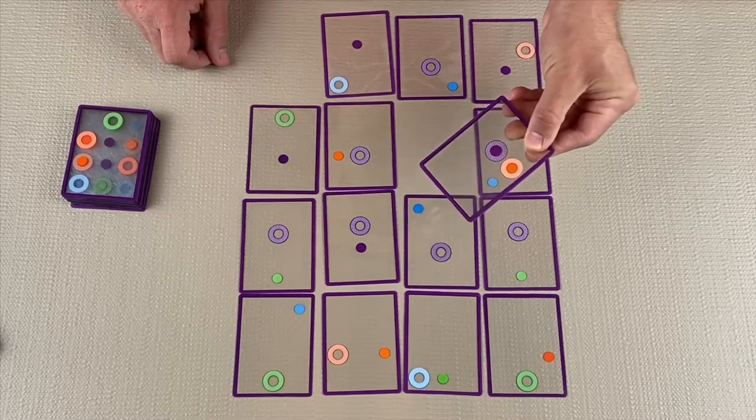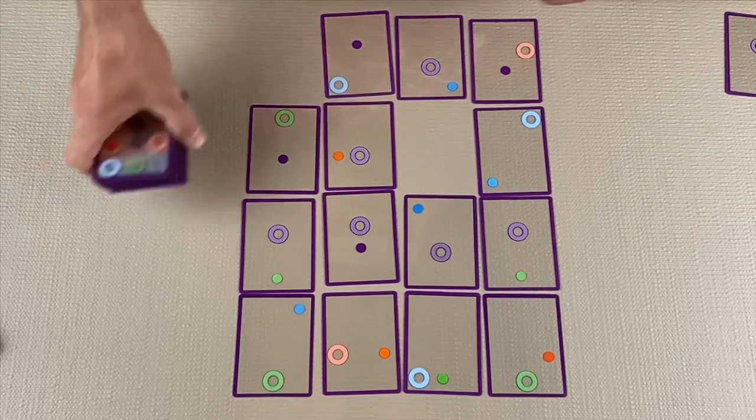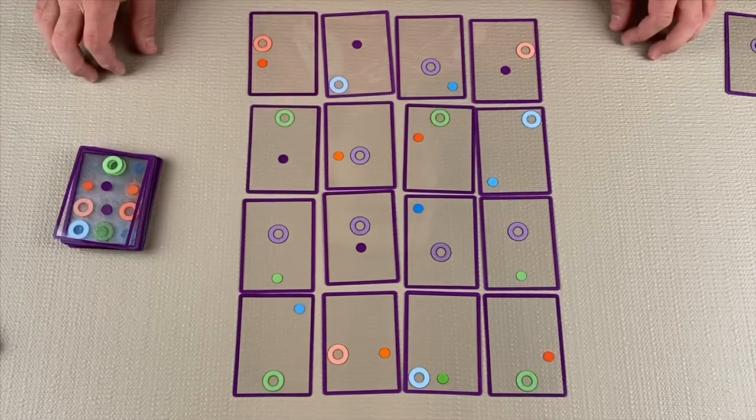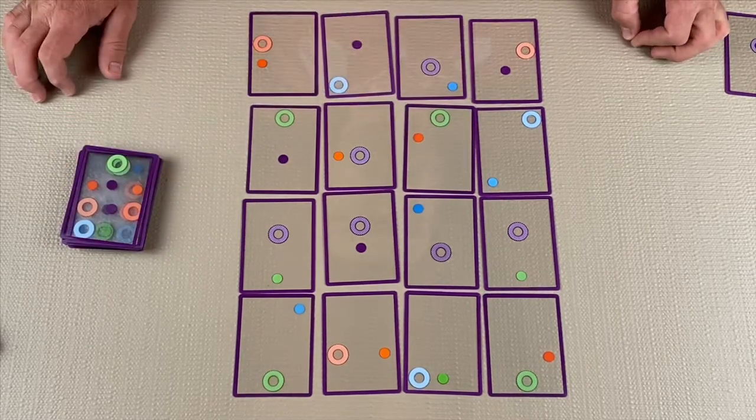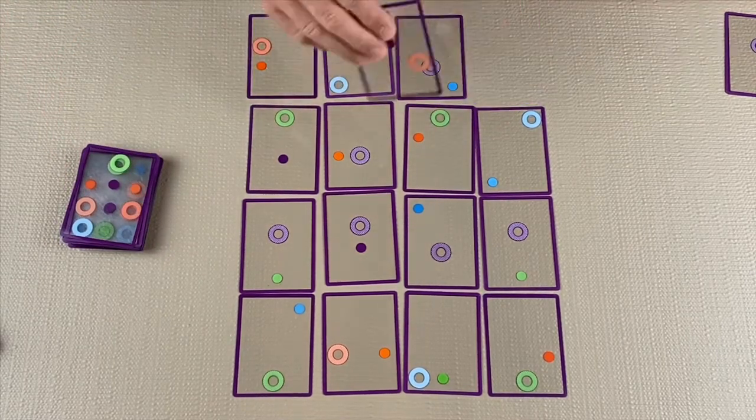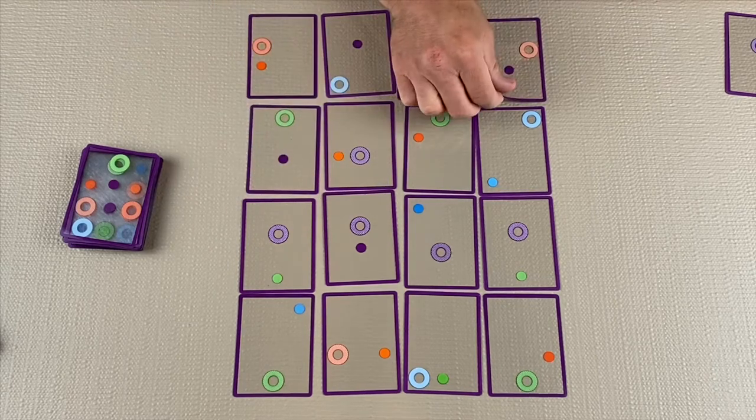The game pauses and the player validates their claim by forming the swish. If it is a valid swish, they keep the cards, and the dealer replaces them with new cards from the draw pile.